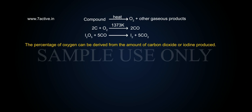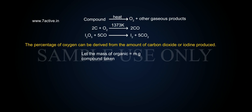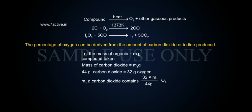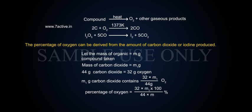The percentage of oxygen can be derived from the amount of carbon monoxide or iodine produced. Let the mass of organic compound taken equal M grams, and mass of carbon dioxide equal M1 grams. Since 44 grams of CO2 contains 32 grams of oxygen, M1 grams of CO2 contains (32 × M1) / 44 grams of O2. Therefore, percentage of oxygen = (32 × M1 × 100) / (44 × M) %.